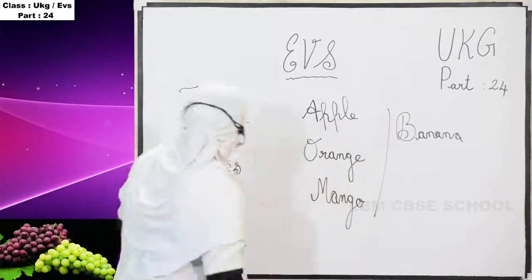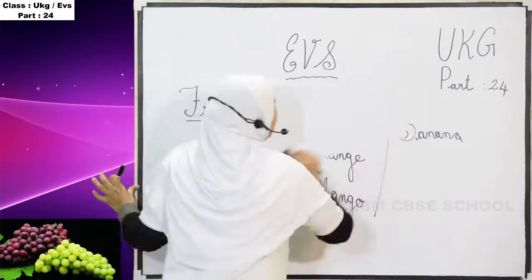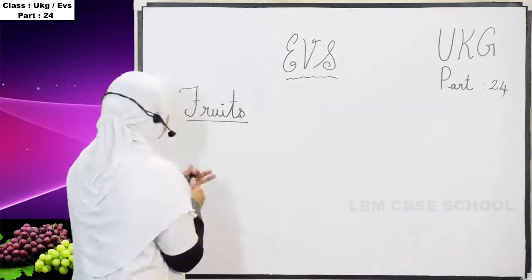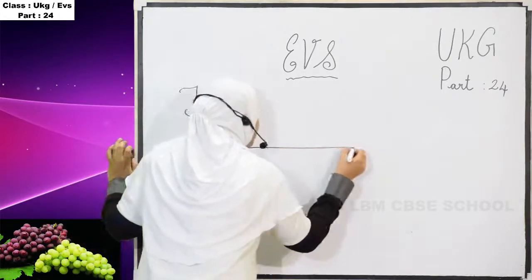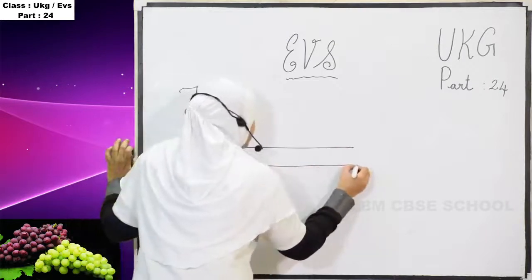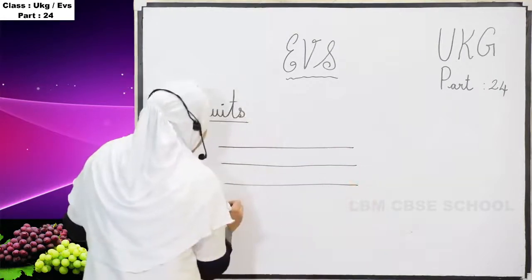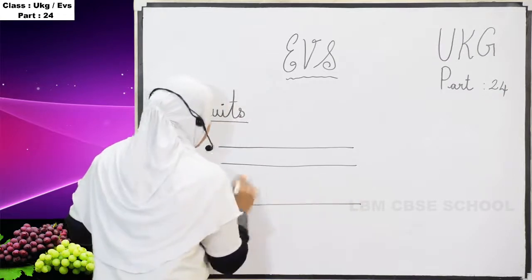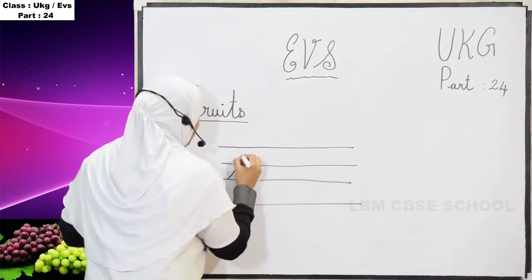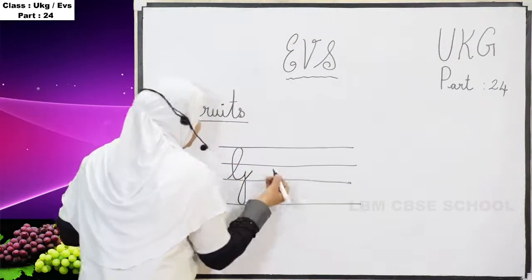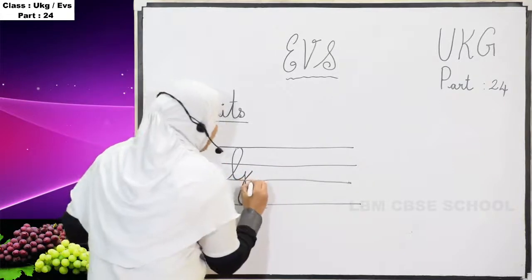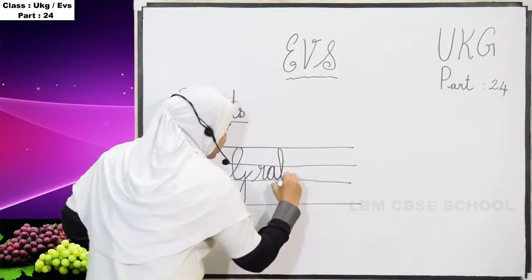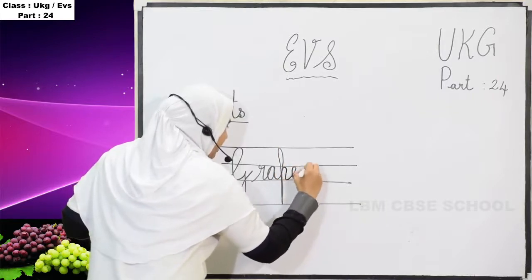Now we are going to write in your notebook. If you take your EVS notebook — which is the fruit? How are we going to write the letter G? G, R, A, P, E, S — grapes.